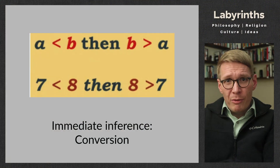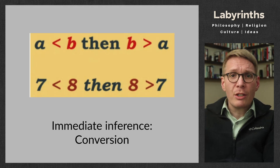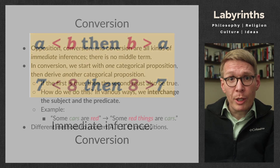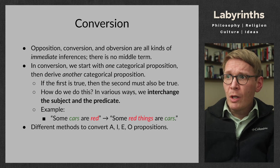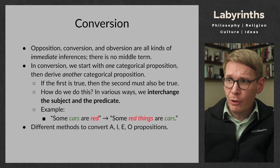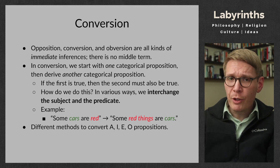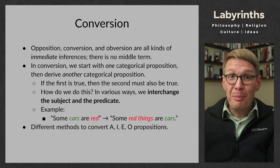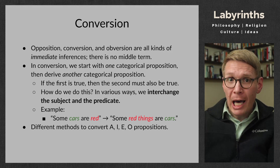Conversion is an immediate kind of inference, something that we can know without having to do any further thinking. We can just perform this operation and derive, mechanically as it were, further propositions — in this case further true propositions — from what we already know. All three of these kinds of immediate inference have no middle term. In each case, we start from one categorical proposition, just like we did with opposites, and we derive from it another categorical proposition, using the rules of logic. What does it imply? That's the question.